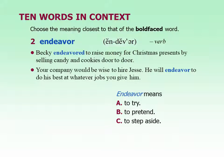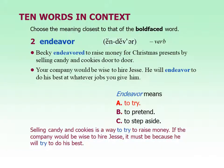The next one is endeavor. It's also a verb. Becky endeavored to raise money for Christmas presents by selling candy and cookies door to door. Your company would be wise to hire Jesse — he will endeavor to do his best at whatever jobs you give him. This word is just a fancy word for try. It always comes with an infinitive after it: 'I endeavor to do my best.' She endeavored to pass the class even though she'd had a few low grades. He endeavored to get a job right after he came to the United States.